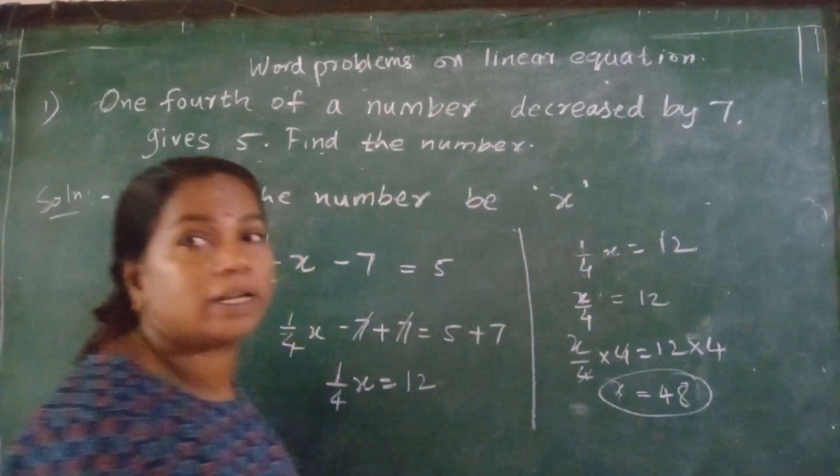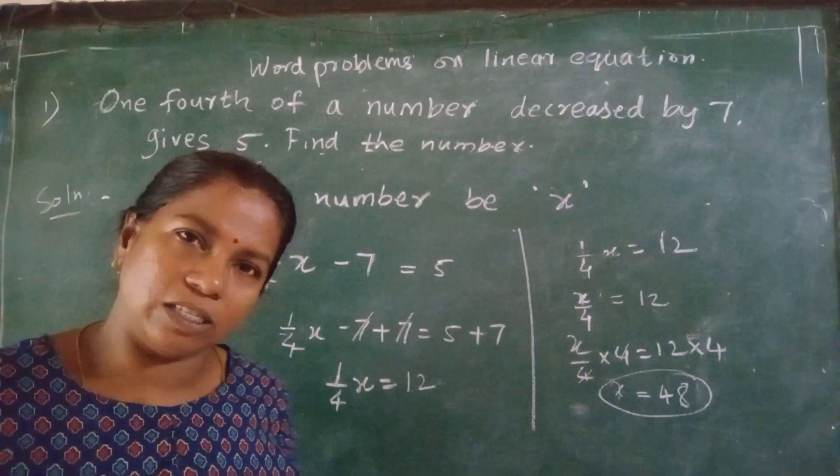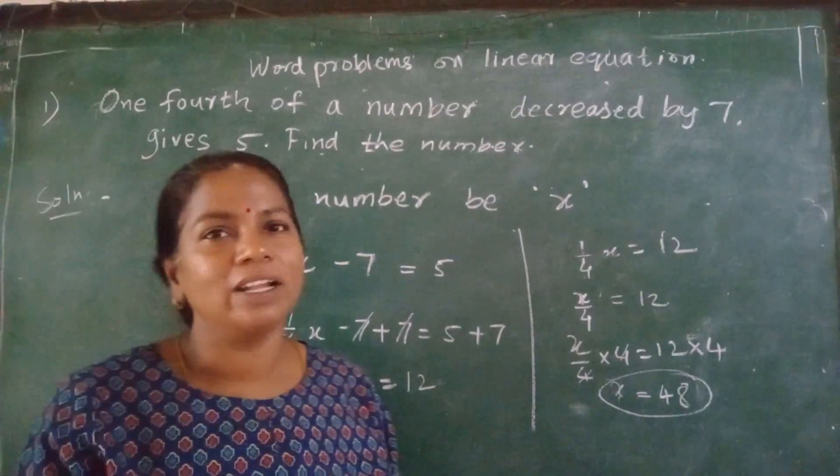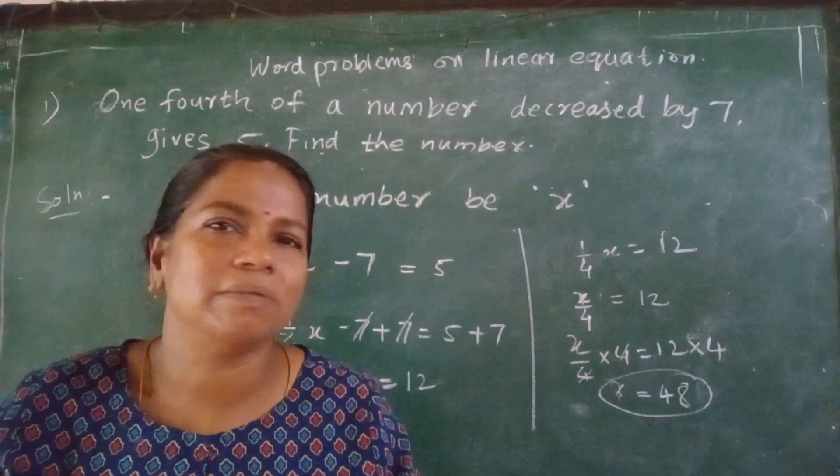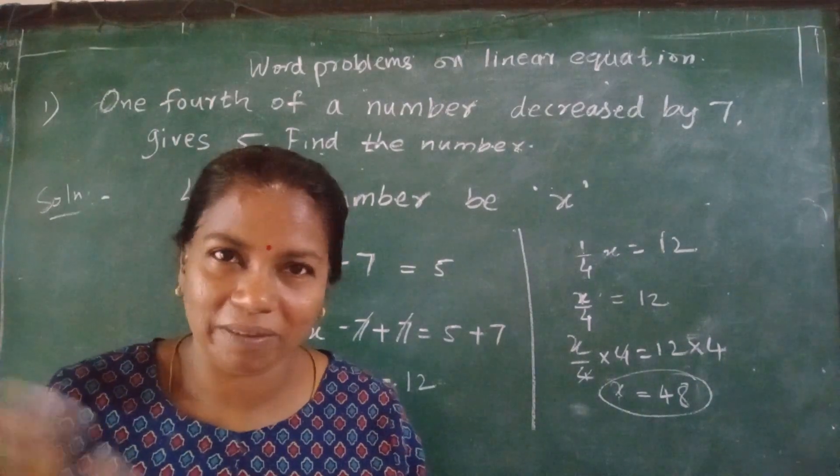So what is the number? The number is 48. Got it? Understood? Easy. Very good. So what do you do? Write it down. Practice. I will give you a few more examples in the next videos. Okay. Bye.